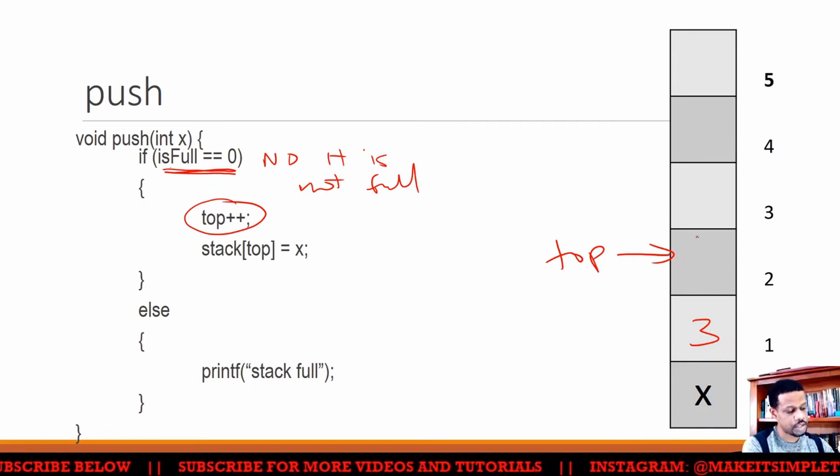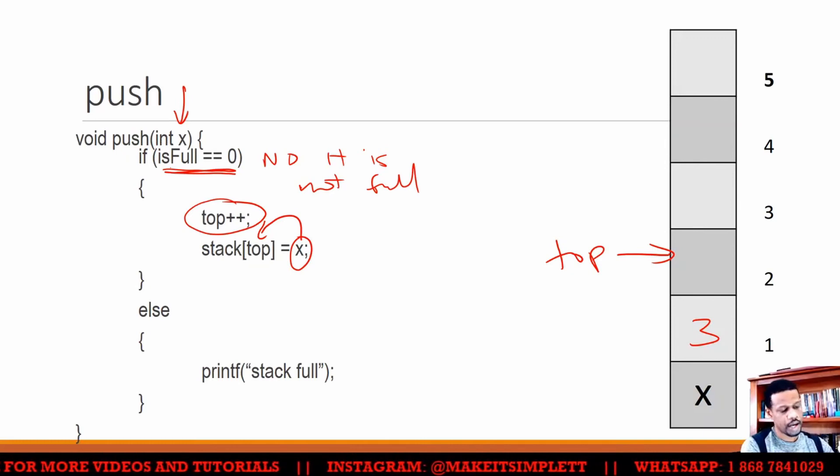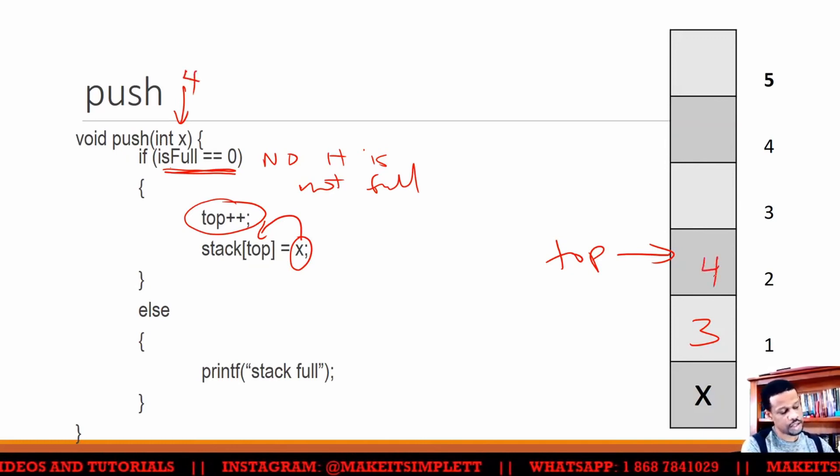And once the top points to there, then you know this space is empty. So I'll take the value X and put it inside stack[top], which will be here. The int X is what you've got inside that was passed to the function. And then you'll put the number here. So let's say the number that we put is four, four will go inside there, just like that.